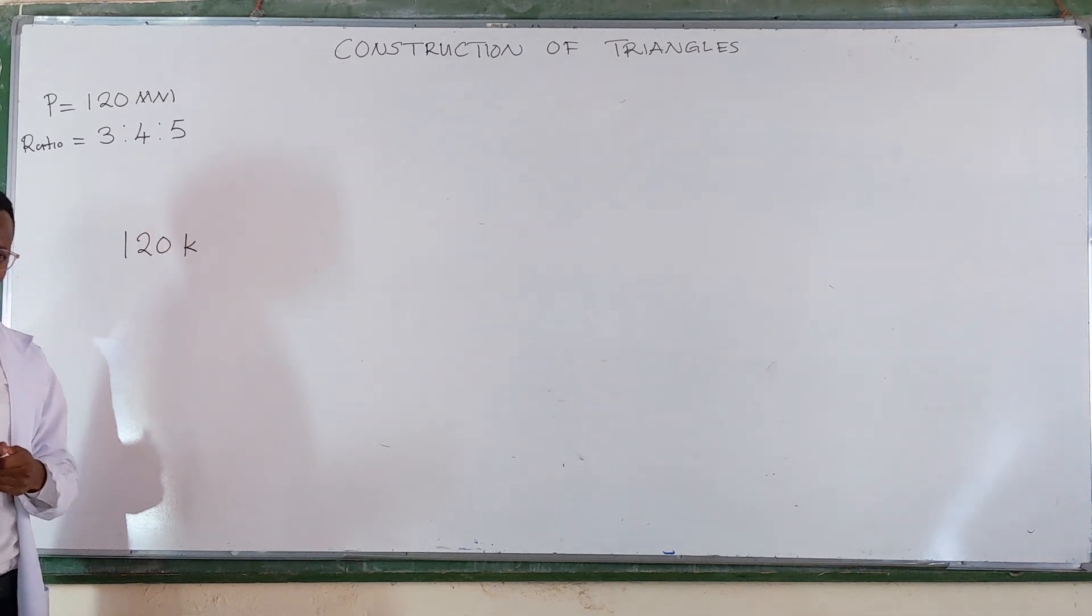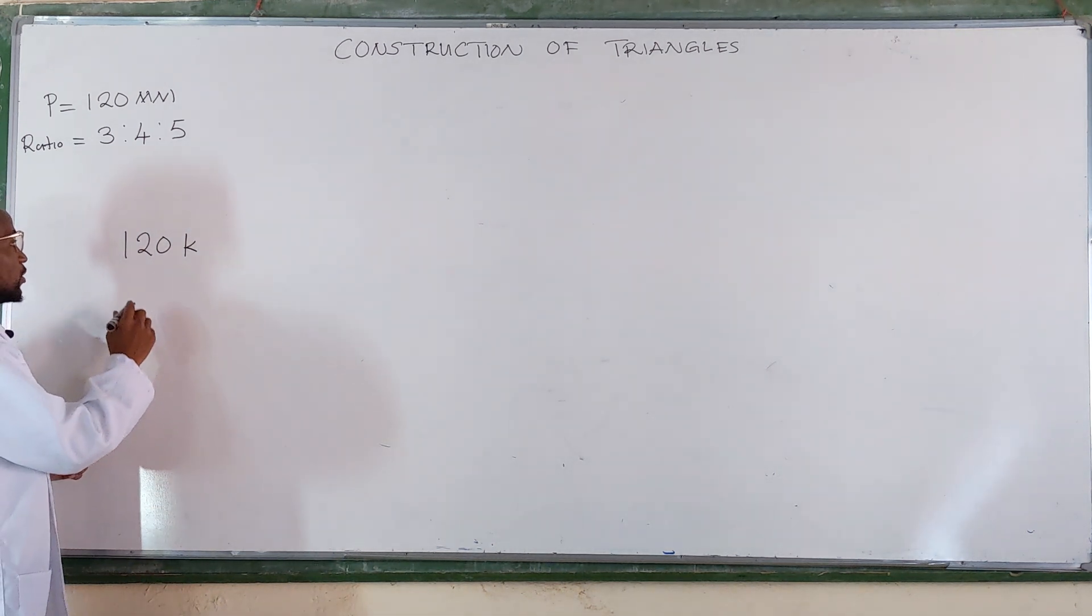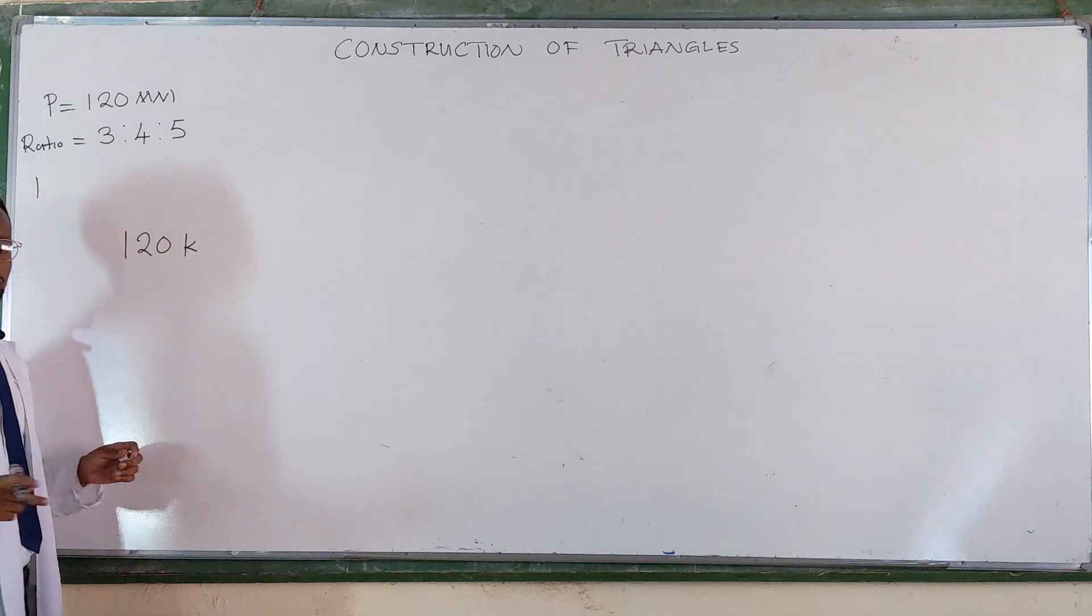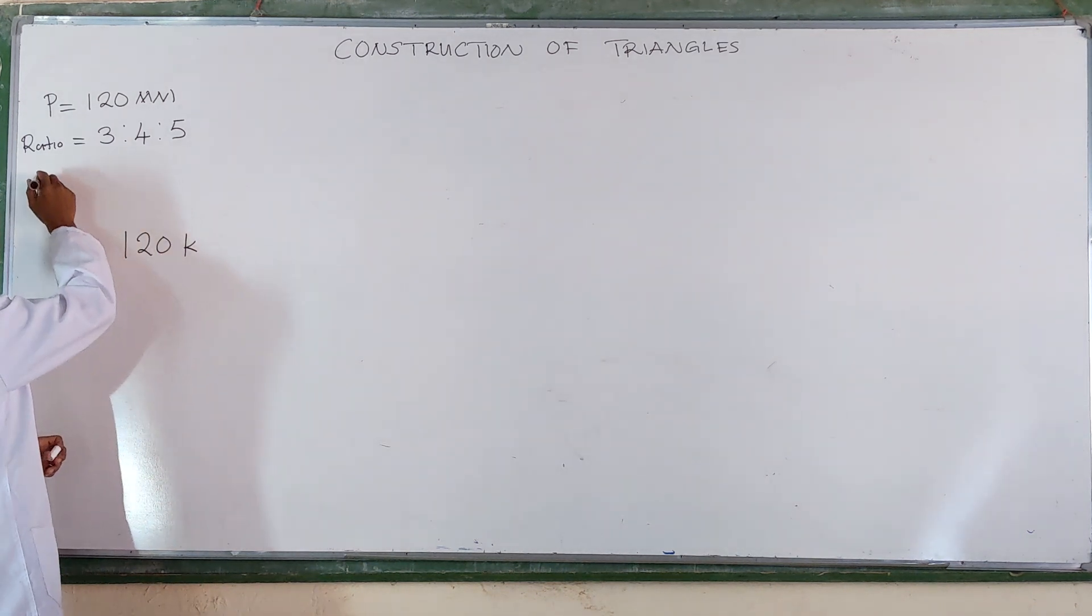You find the total ratio. I know that you know, you're just pretending. So the total ratio is given by adding all these ratios. What is the total ratio?